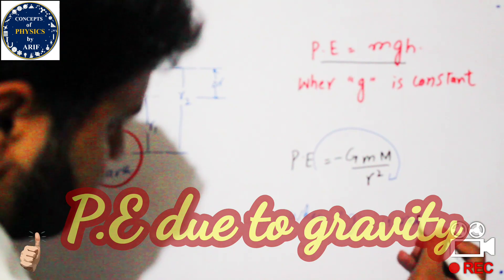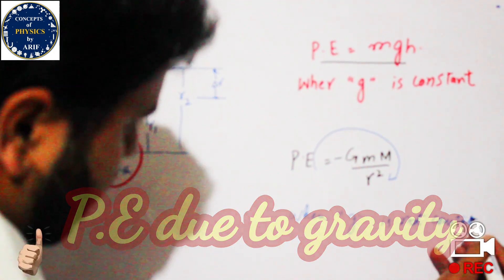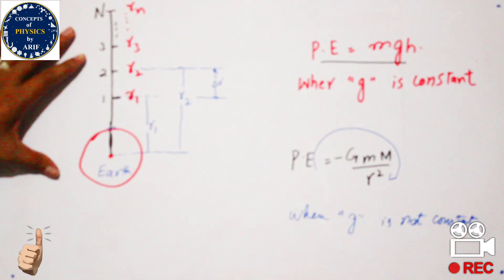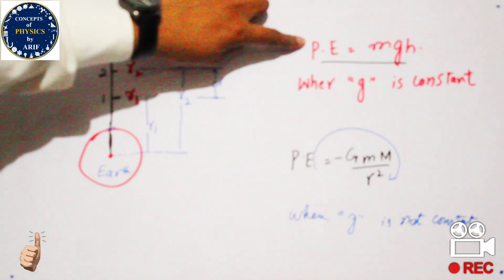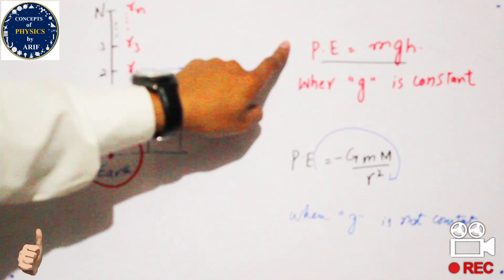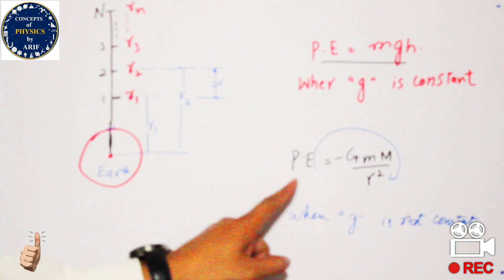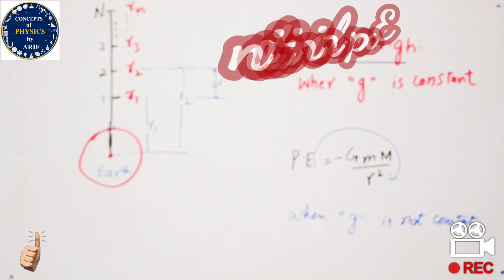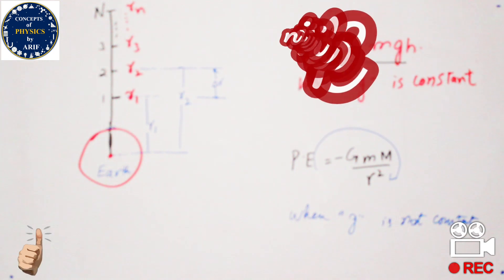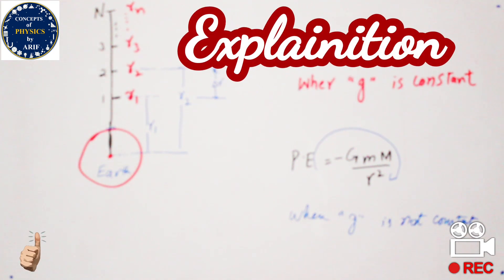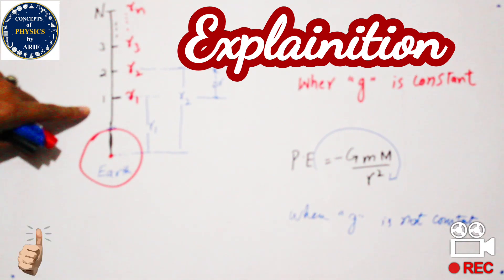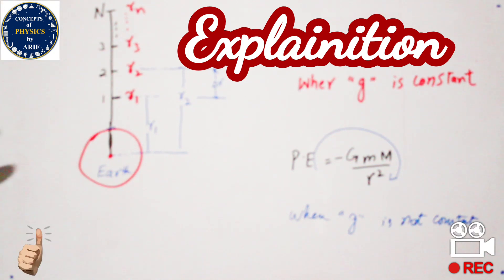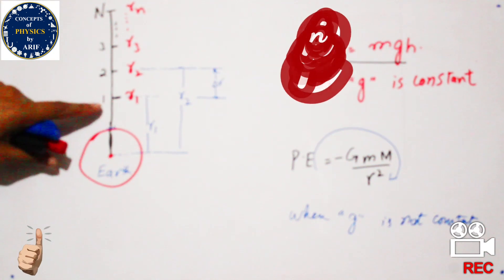This formula holds when the value of g is not constant but variable. So we can say that the formula U = mgh cannot hold true for absolute potential energy. In order to solve this problem, we need to explain it in the form of intervals — we will divide all the travel into small distances.